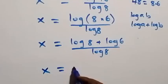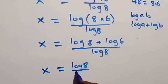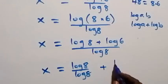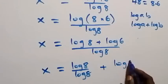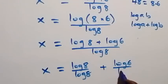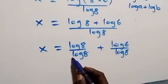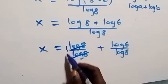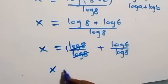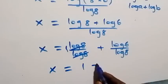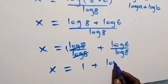We can separate this fraction, which becomes x equals log 8 over log 8 plus log 6 over log 8. Here log 8 over log 8 cancels out to become 1, so we have x equals 1 plus log 6 over log 8.